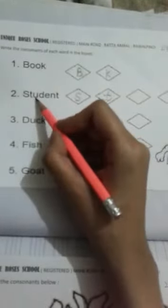Second word is student. Student, first of all, what do we have to write? S, T, U - we don't have to write it. D, E - we don't have to write it. N, last T. We have to write S, T, D, N, T.